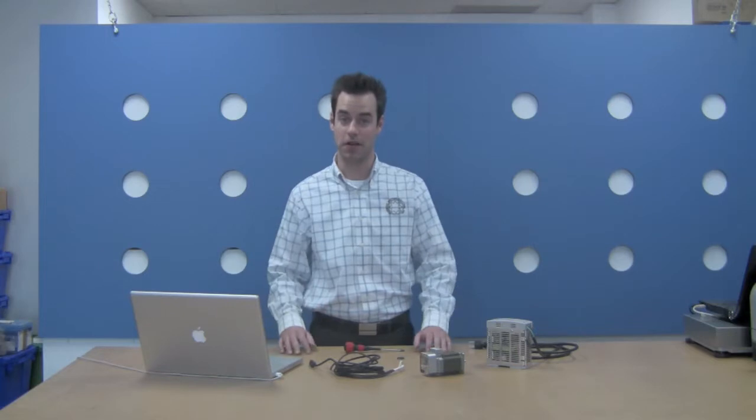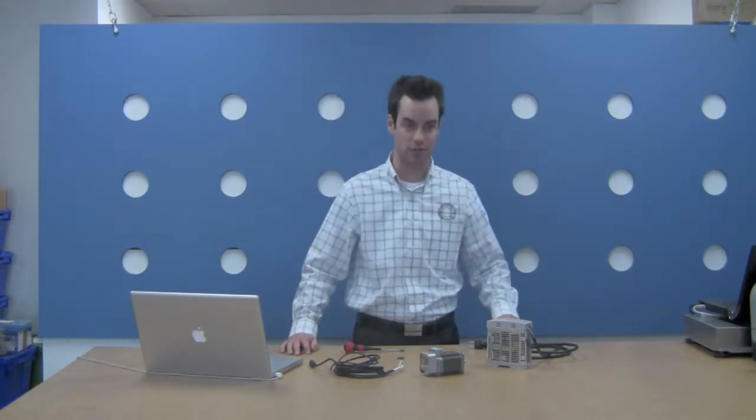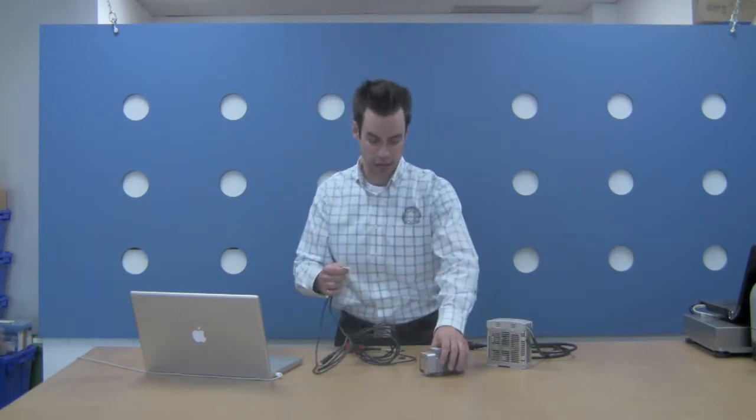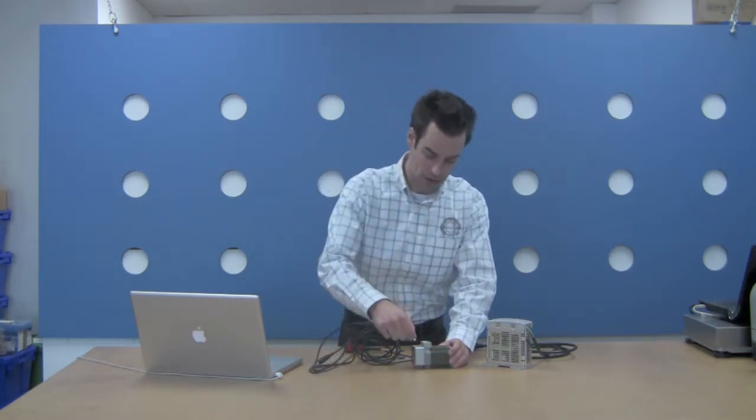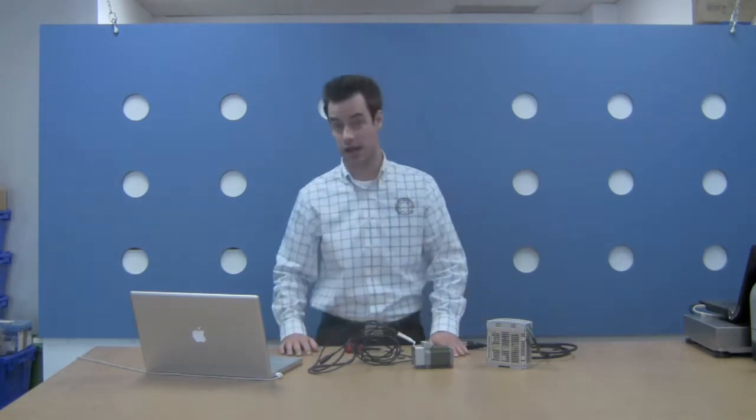Before we do any work with the CoolMuscle, we want to make sure that our DC power supply is turned off. Next, we will insert the white 12-pin molex connector into the mating connector on the back of the CoolMuscle servo. Do not force the connector in.